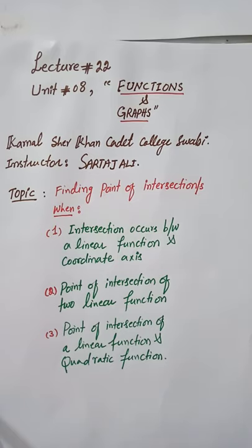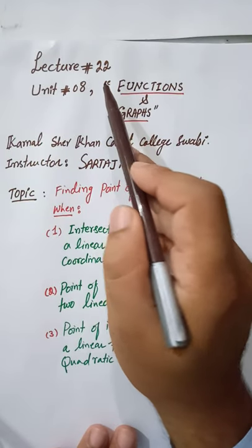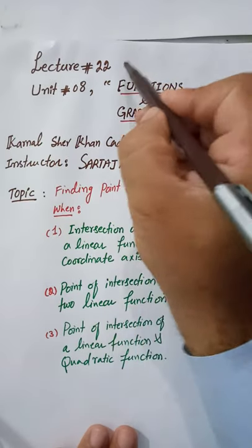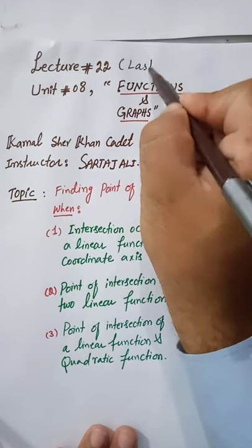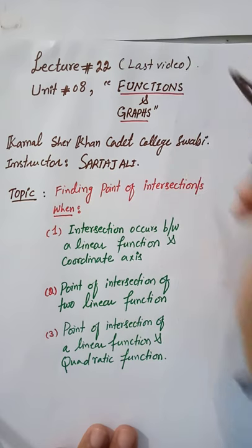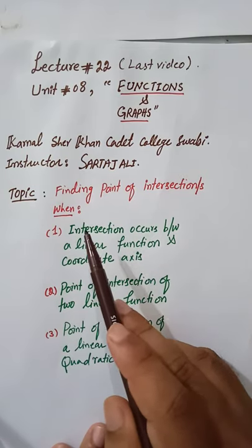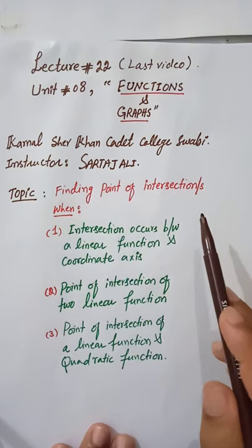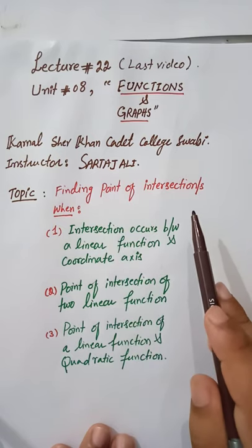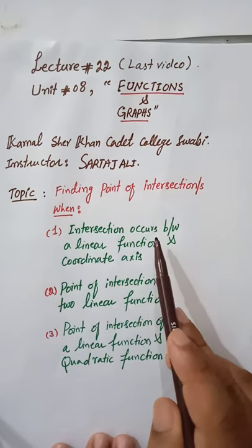Bismillahirrahmanirrahim. Video lecture number 22, this is the last video lecture of chapter number 8. In this video lecture we will discuss the topic of finding points of intersection when intersection occurs between a linear function and the coordinate axis.